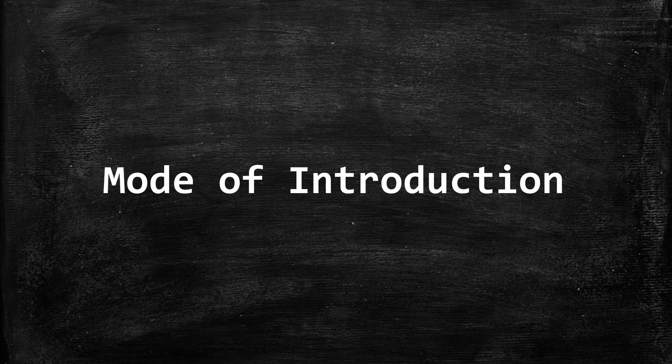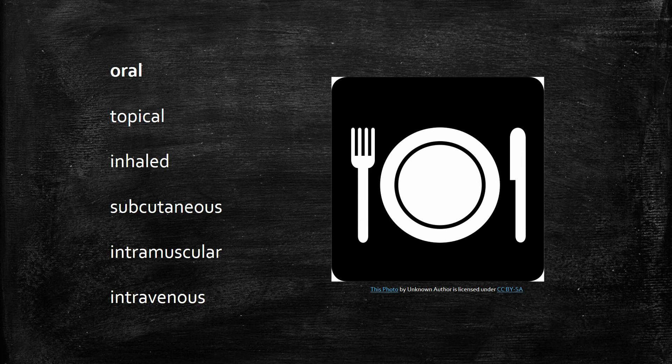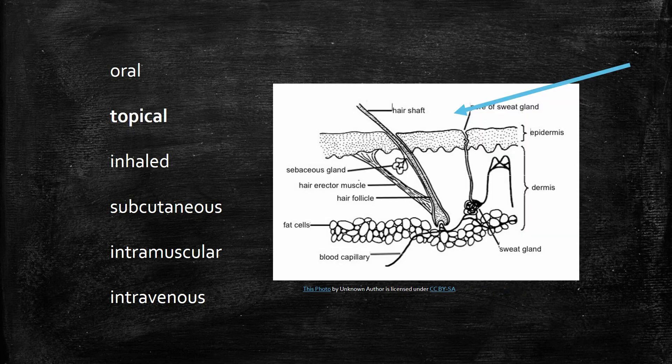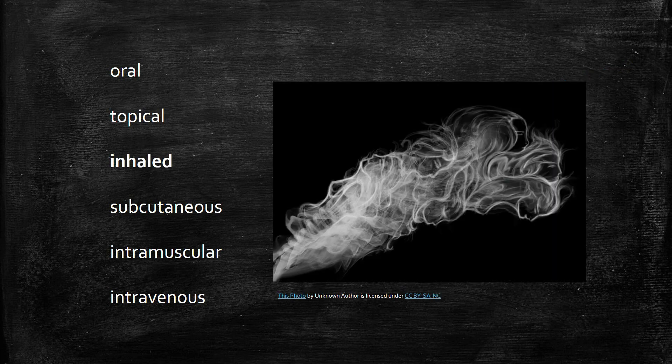Mode of introduction is how a substance gets into the body. Oral is through your mouth — from eating, drinking, somehow ingesting something. Topical is absorbed through the skin; for example, mercury can be absorbed through the skin, and in theory you could put a poison in a lotion that soaks in. Inhaled is something you breathe in — different smokes, gases, fumes, and vapors.